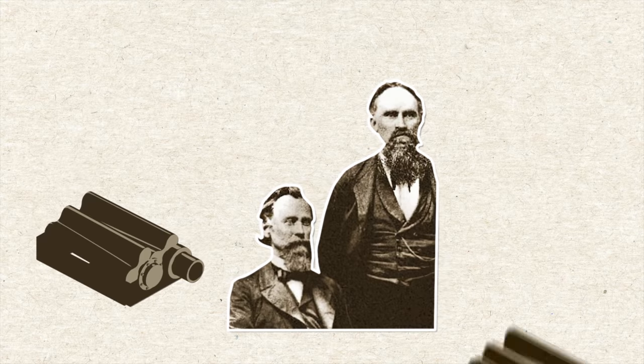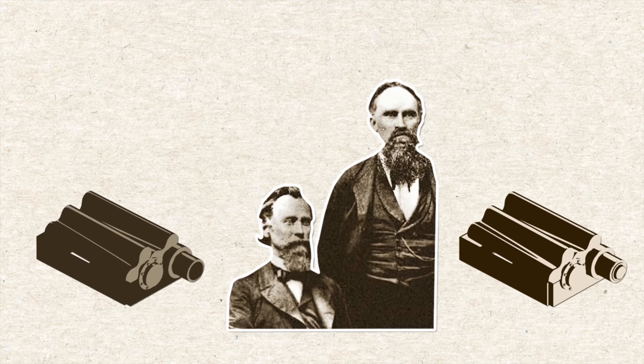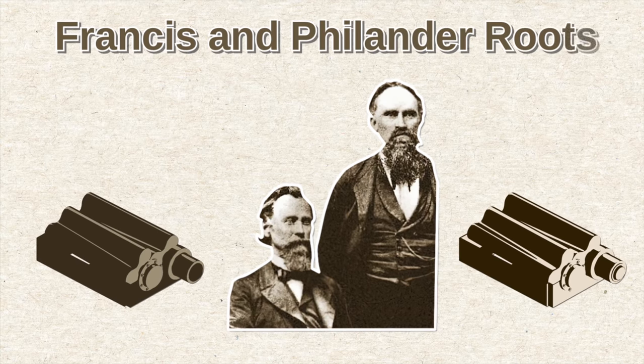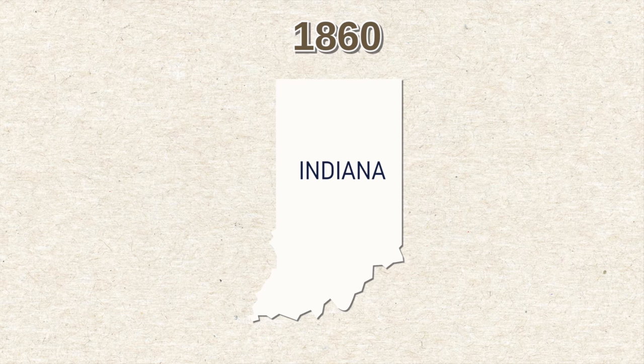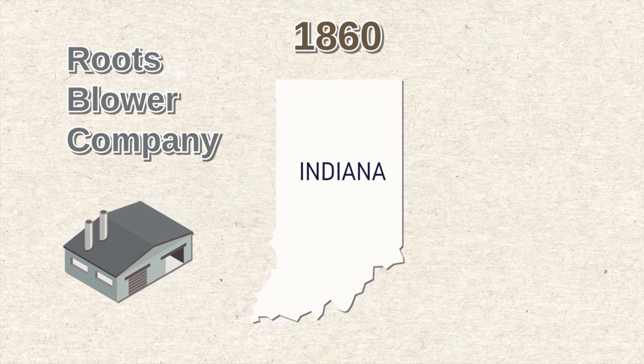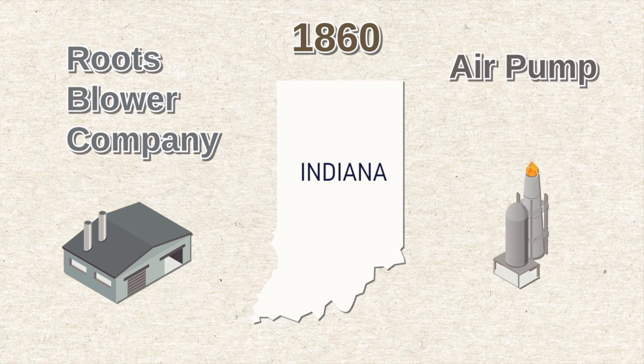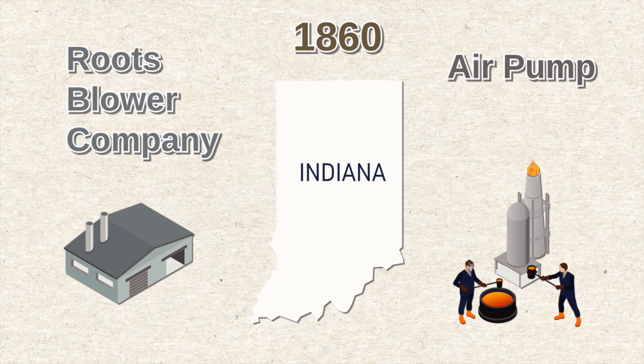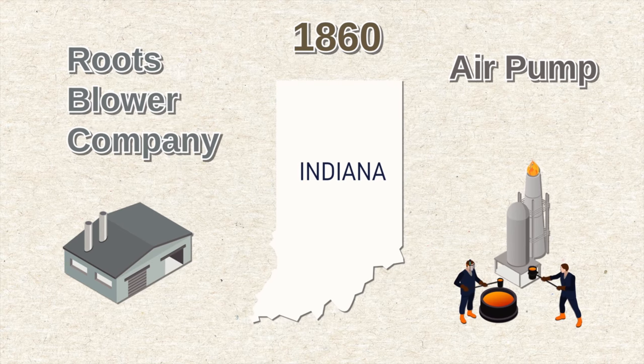The Roots supercharger is the oldest design. It's named after Francis and Philander Roots. Back in 1860, in Indiana, the Roots brothers founded the Roots Blower Company. They patented the Roots Blower, which was an air pump used in blast furnaces to blow compressed air to melt iron and for other industrial applications.